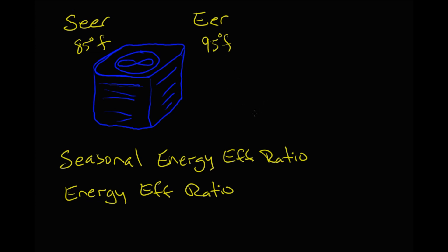So what's the other difference? SEER takes into account the stopping and the starting of the equipment and it gives you a seasonal number that you can actually use to do a calculation to see what it would cost you to run that piece of equipment over a typical season in your area. You can actually do the math. We'll do that in a second.